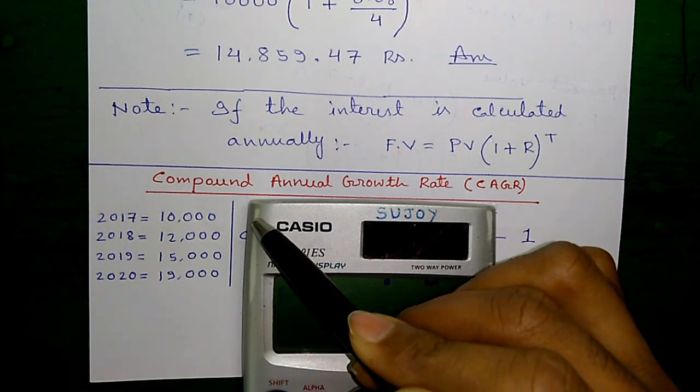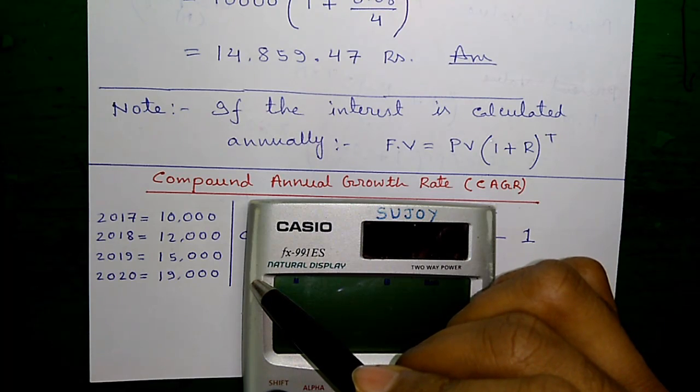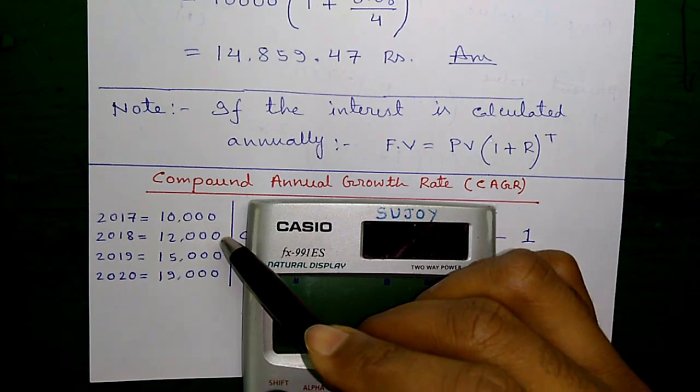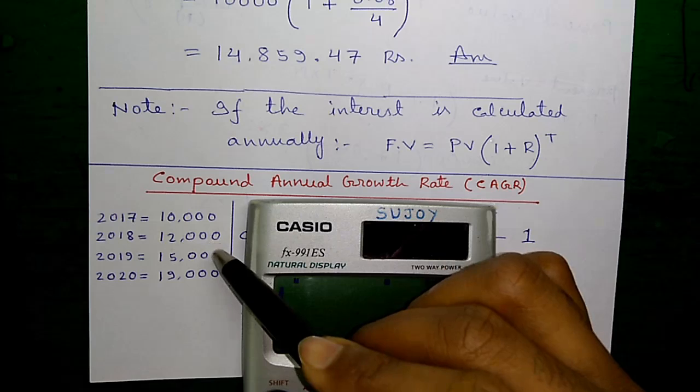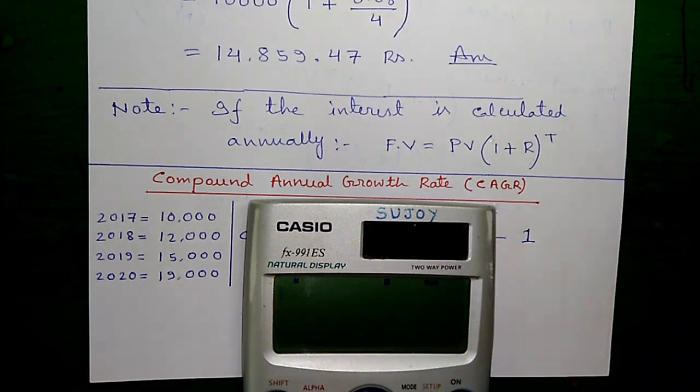So you can see the value of your investment is increasing over the years but not uniformly. In first year, it increased by $2,000. In second year, it increased by $3,000. In third year, it increased by $4,000. So what is the uniform rate of growth? That is given by CAGR.